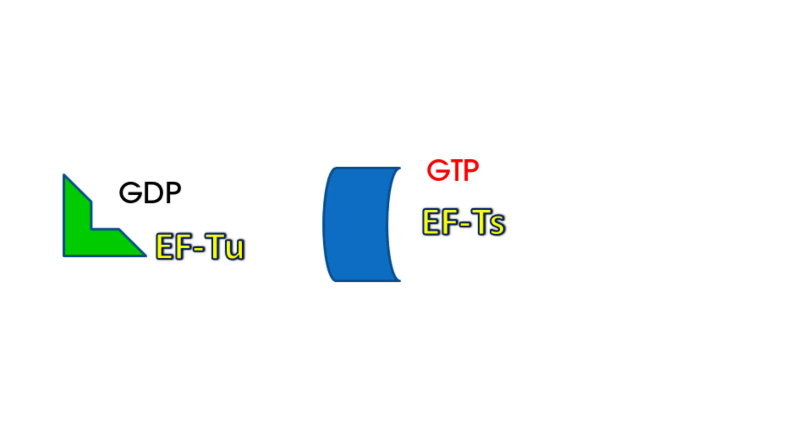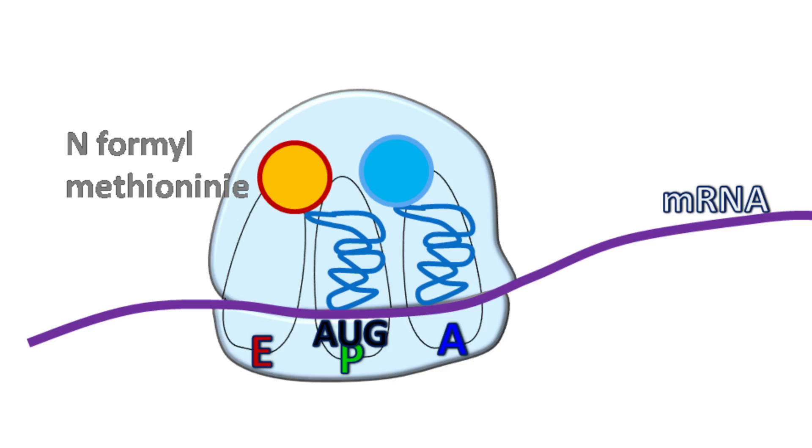The elongation factor EFTS helps in the recycling of GDP by GTP. In the next step, there is a peptide bond formation between the two amino acids.